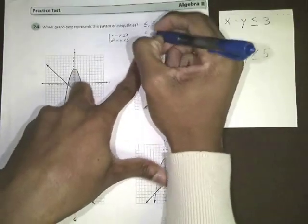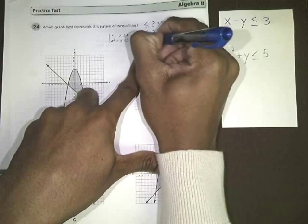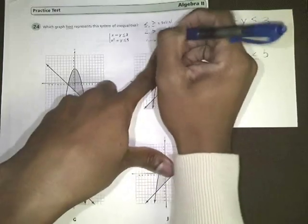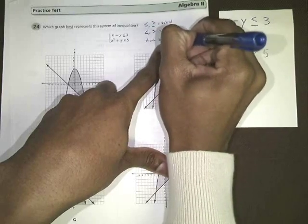Another thing that we have to remember is that whenever we divide by a negative number, we must flip our inequality. Whenever we multiply or divide by a negative, you must flip your inequality sign.